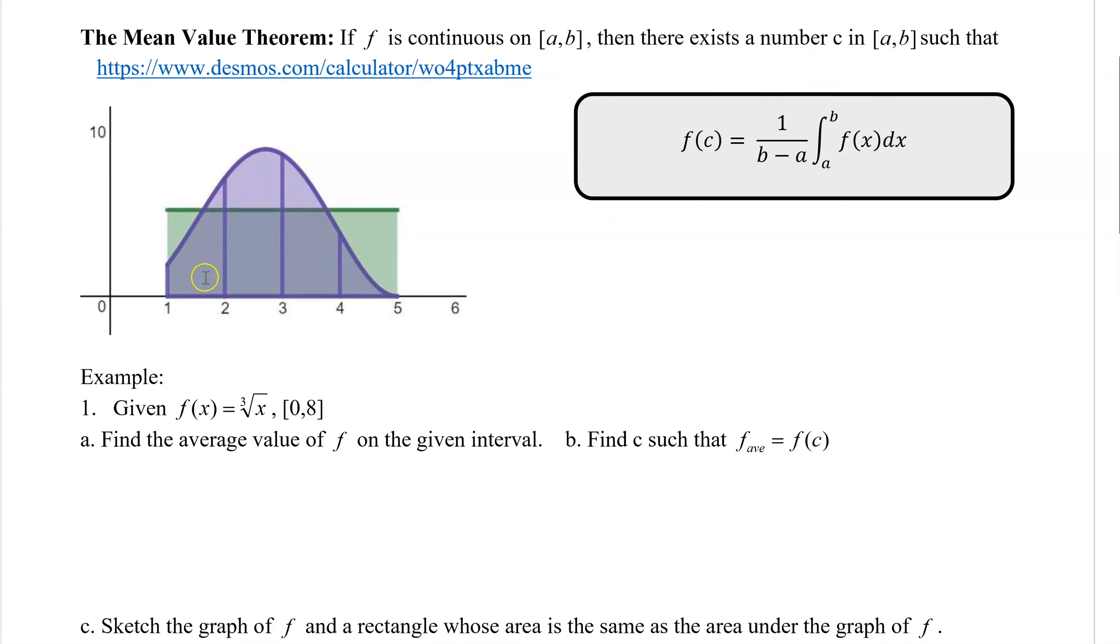If f is continuous on [a,b], so we have that same function f that has to be continuous on [a,b], that's our f(x) there in purple, then there is a number c in [a,b] such that this is true.